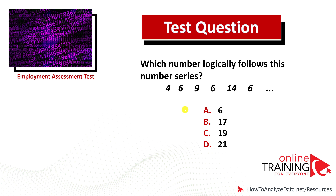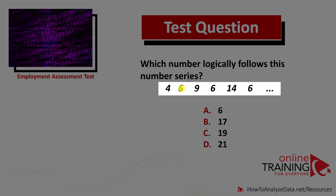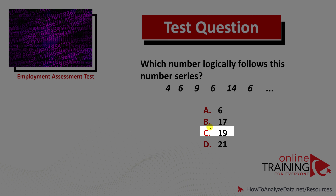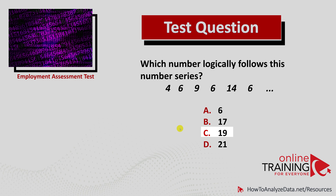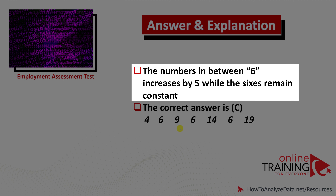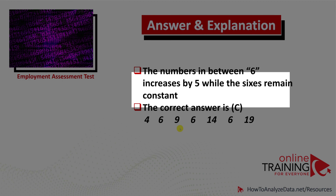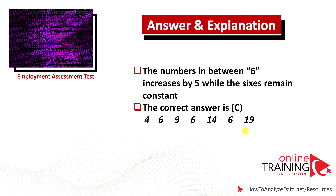The best way to answer these questions is to determine the pattern. There are two patterns here. One is the repeating number 6 in between every other number. The pattern of numbers between the 6s increases by 5: 4 increasing by 5 leads to 9, and 9 increasing by 5 leads to 14. So the next number after 14 is 19. The numbers between the 6s increase by 5, while the 6s remain constant. The correct answer is choice C, which is 19.